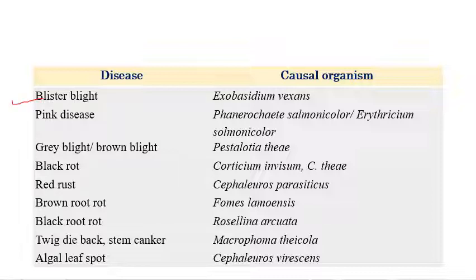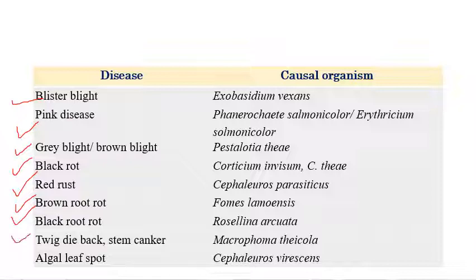Blister blight is caused by Exobasidium vexans. The second is pink disease, caused by Pellicularia salmonicolor or Erythricium salmonicolor. Gray blight or brown blight is caused by Pestalotiopsis. Black rot is caused by Corticium invisum or Corticium theae. Red rust is caused by Cephaleuros parasiticus. Brown root rot is caused by Phellinus noxius, and black root rot by Rosellinia arcuata. Twig blight or stem canker is caused by Macrophoma theicola. Algal leaf spot is caused by Cephaleuros virescens.